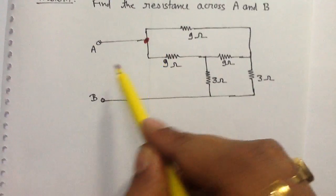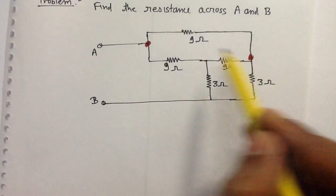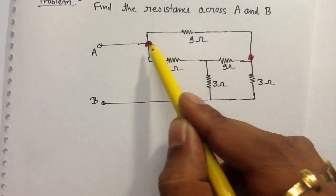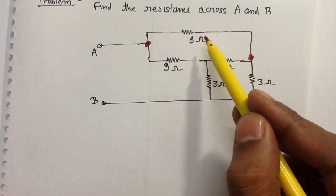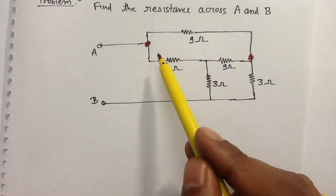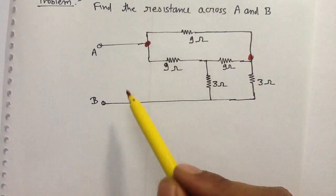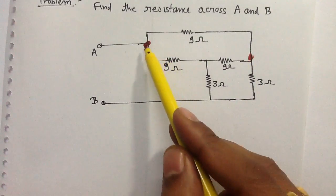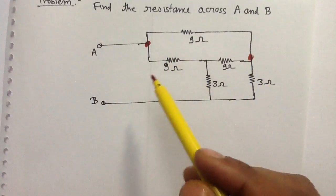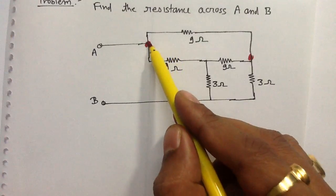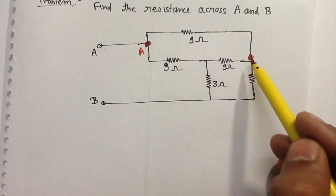This point is A. In between these points, this resistance is 9 ohms. If there are two points with an electrical element between them, then these points are not at the same potential. If this point is named A and this other point is also named A, then this second point is actually different from A.